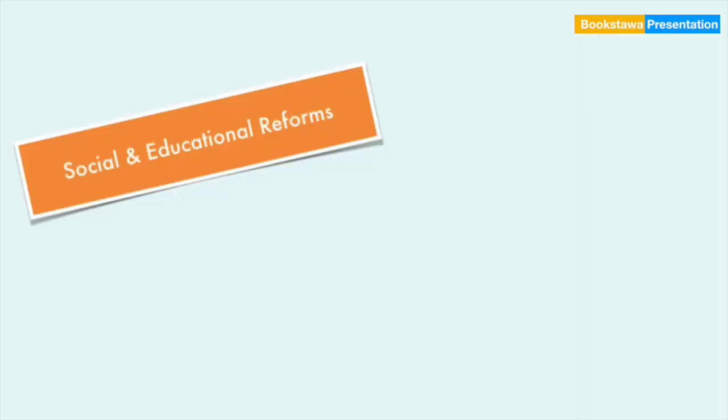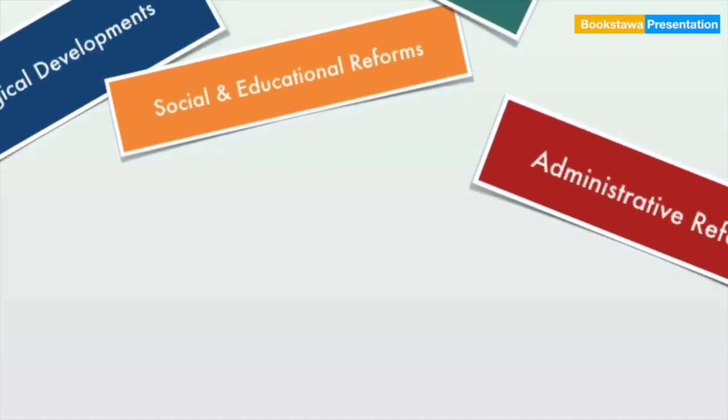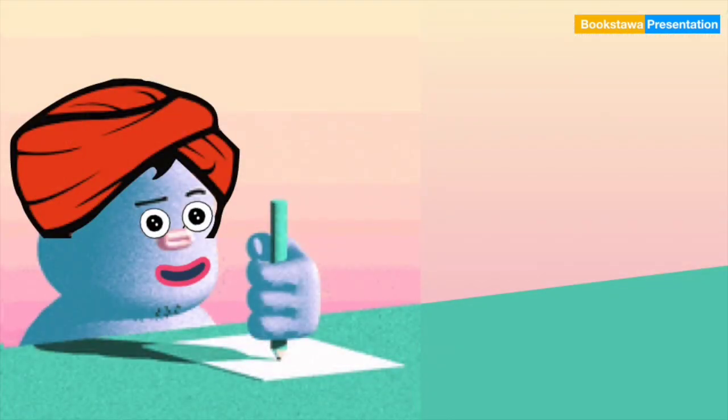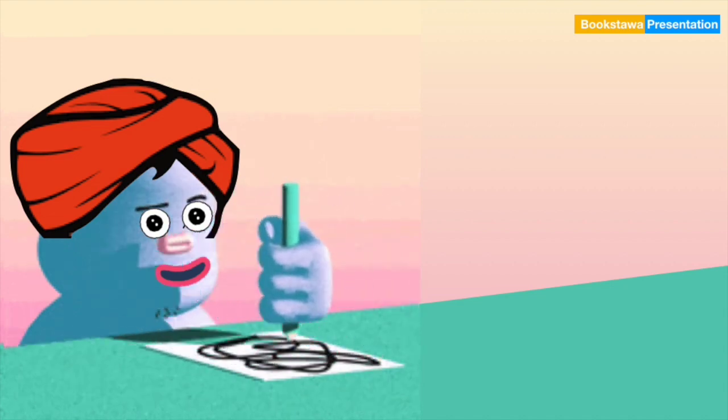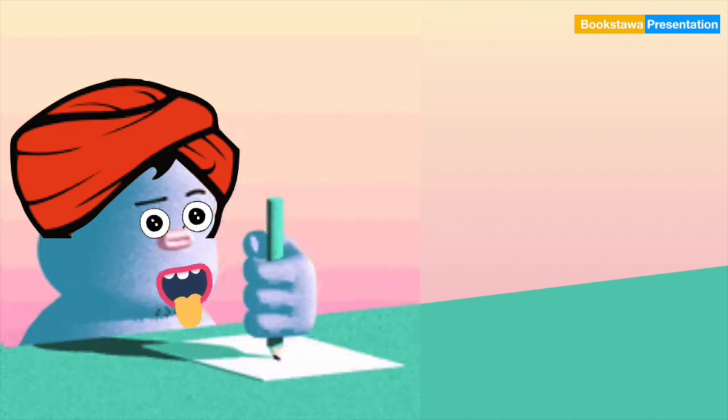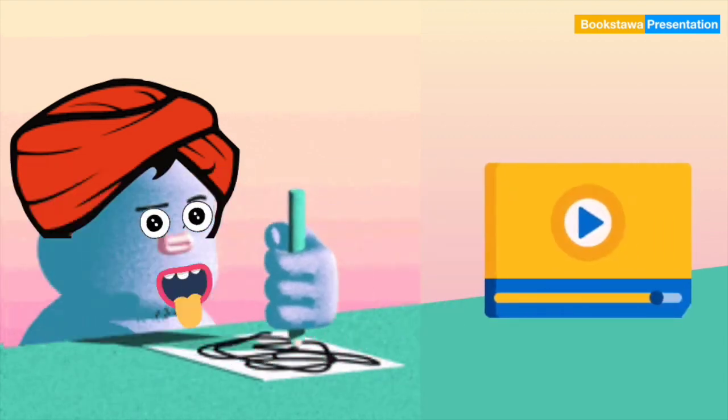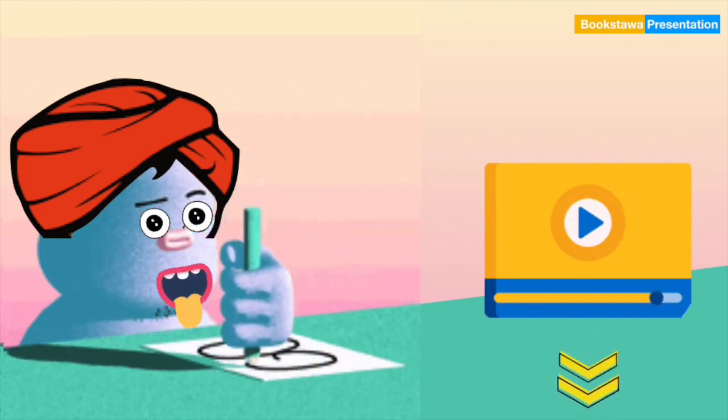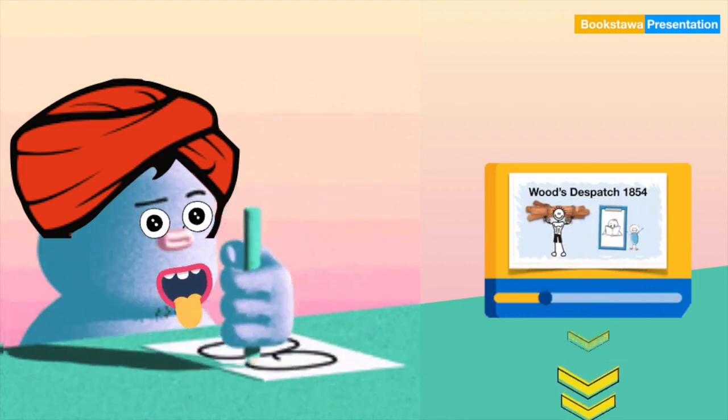Now, let's talk about social and educational reforms. A very important development took place in the field of education at the time of Dalhousie. In his tenure, in 1854, Wood's Dispatch came to India, which is called Magna Carta of English Education in India. Magna Carta means official beginning, because of which universities were formed in India on the model of London universities. Government schools were opened, new departments were created, and many other things happened, about which we have uploaded a detailed video. You will find its link in the description.